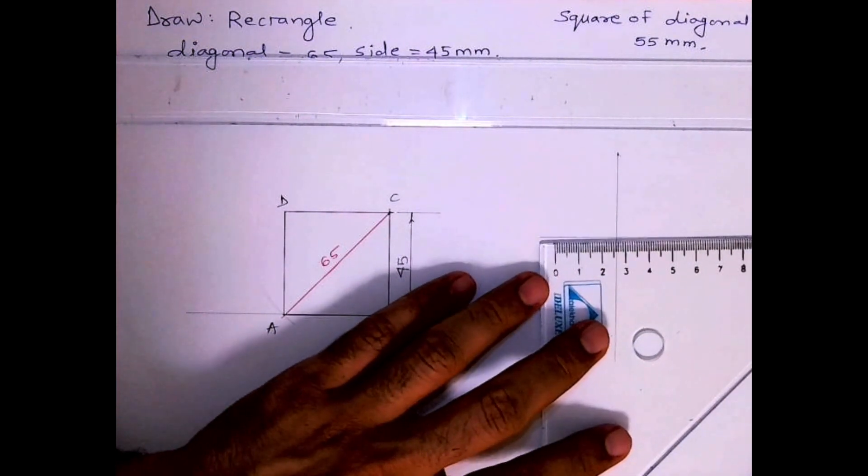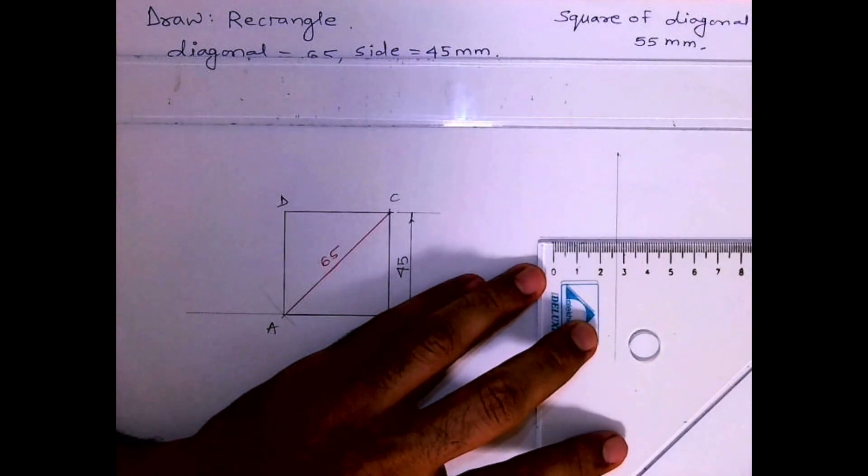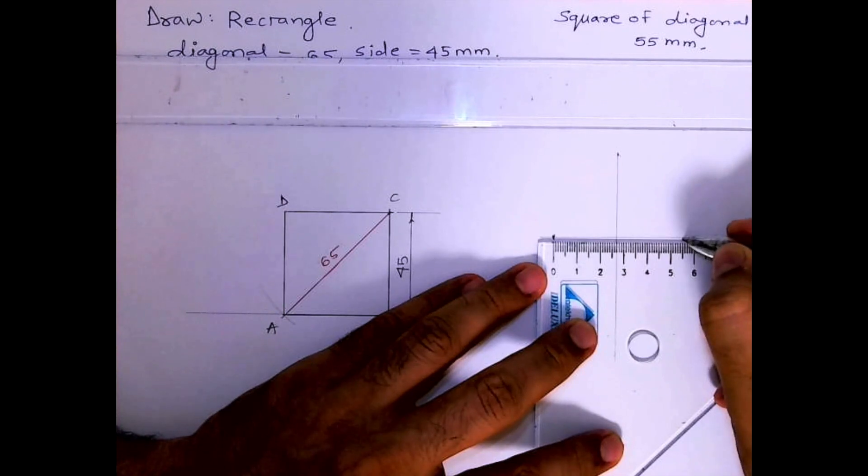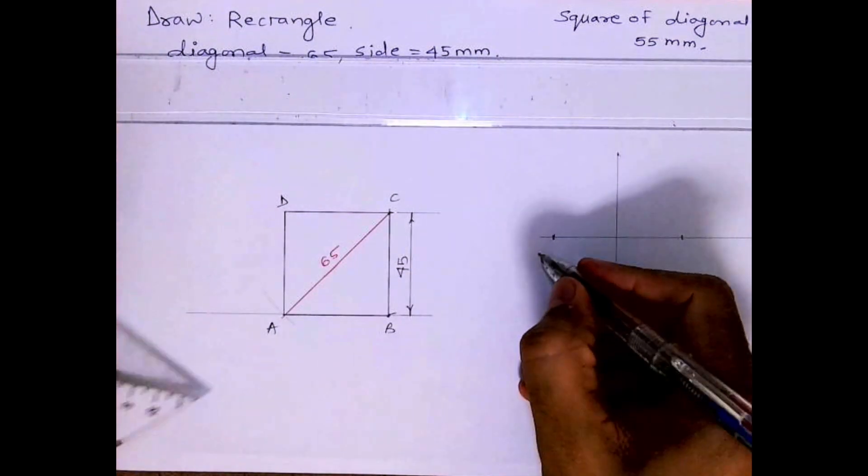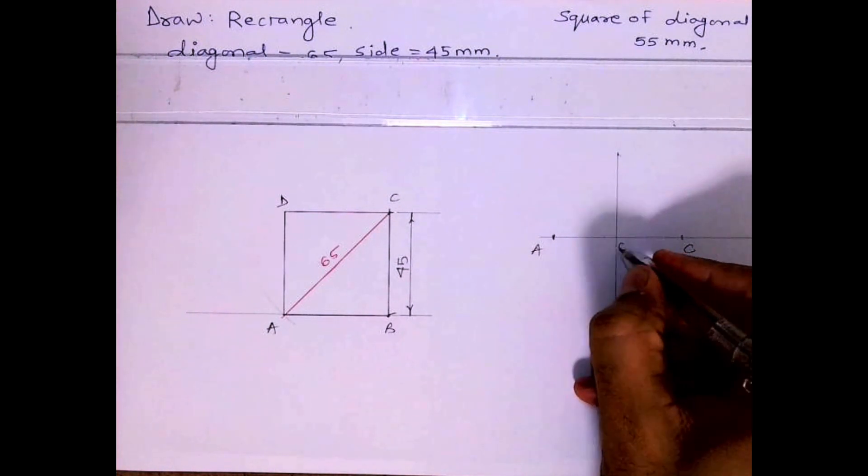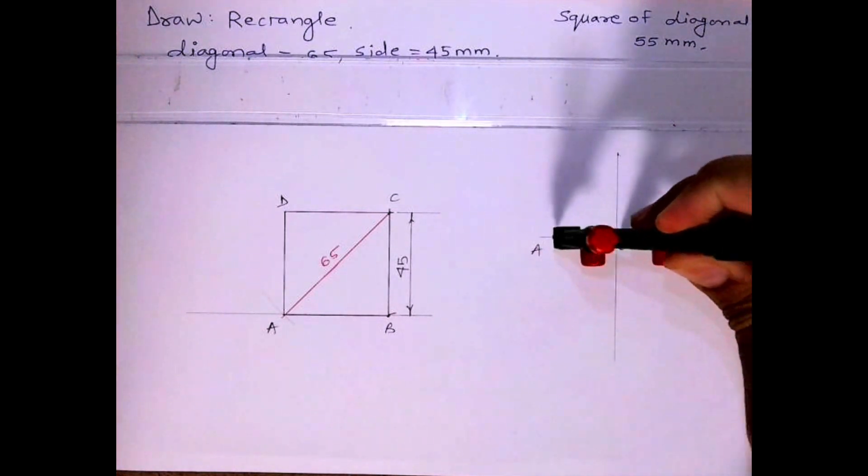So half of 55 would be how much? We'll take 27.5 on both the sides. So you can draw line 55 and you can bisect. You'll get O, then you take half of the diagonal.